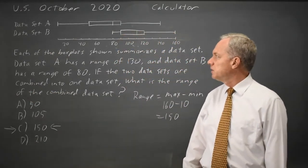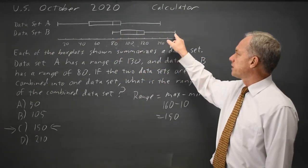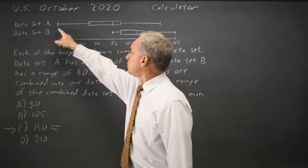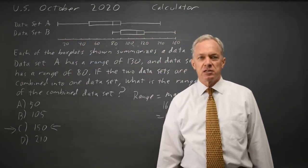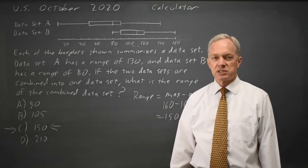So our answer here would be the difference between the maximum overall and the minimum overall, which is 160 minus 10 is 150, choice C.